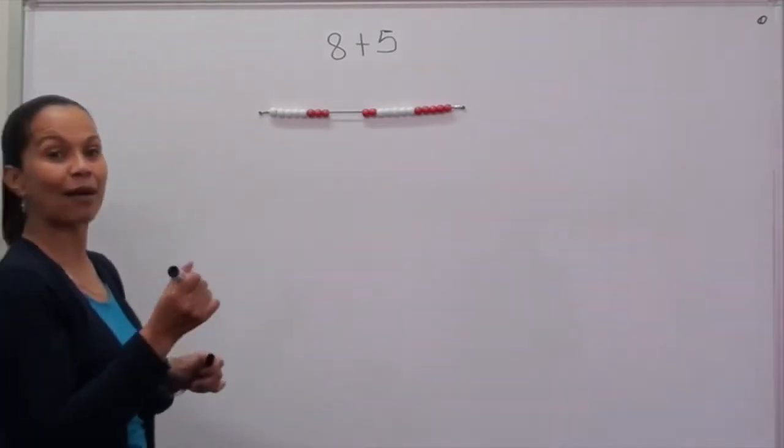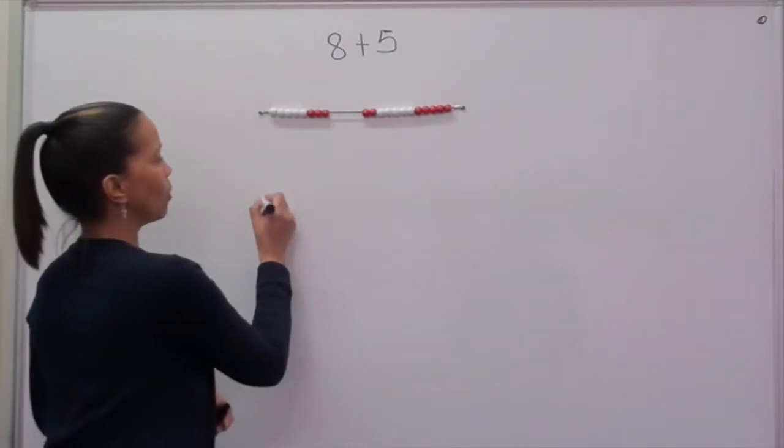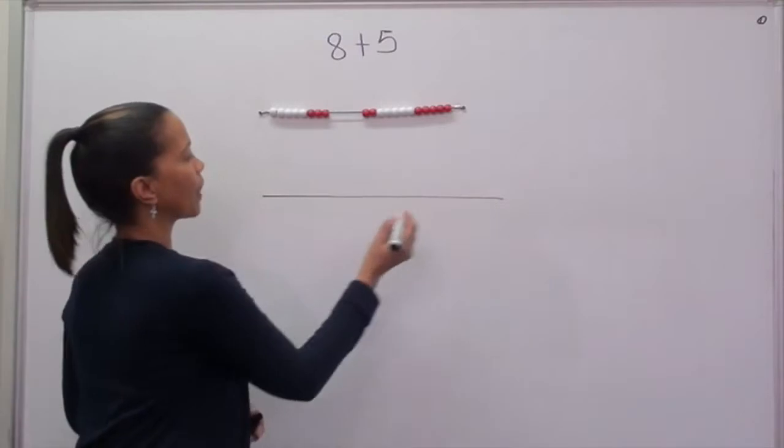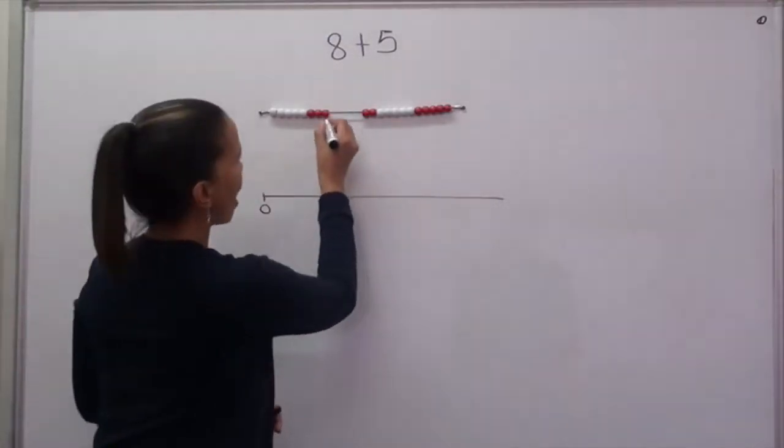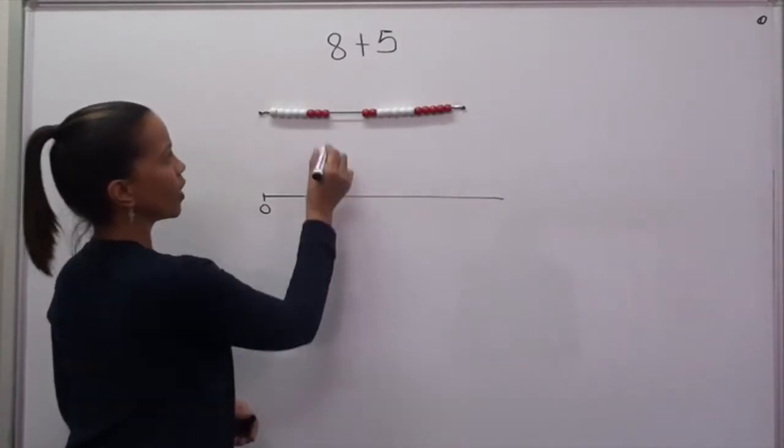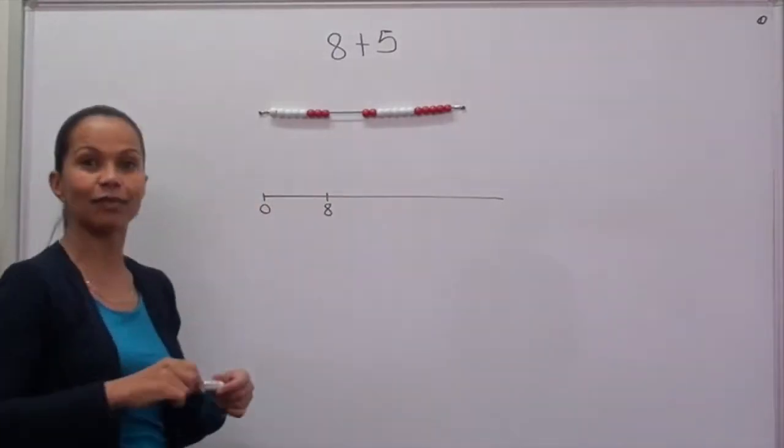Now I'm going to show you that on a number line. I'm going to draw my number line. Put in my 0 and I'm going to mark my 8 because I've moved over 8 beads.